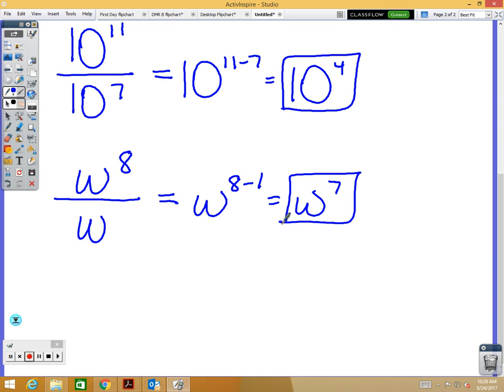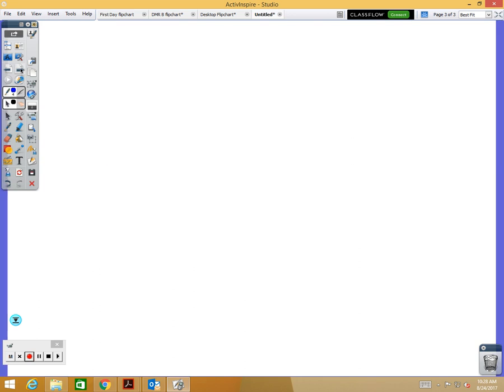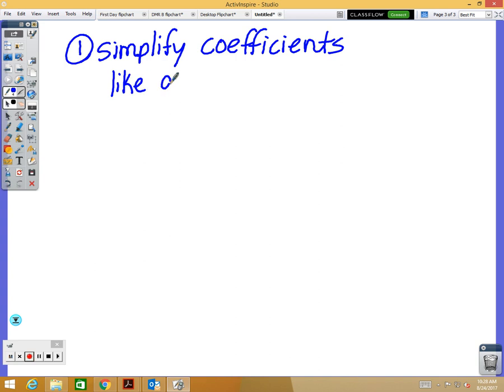Alright, let's talk about what's going to happen then if you have coefficients. So just like in the other problems, the harder ones had coefficients, numbers in front of your variables. We'll see what happens with those. So if you have coefficients, the first thing you're going to do is you're going to simplify the coefficients like it was just a fraction. And then your second and third steps are the same. Keep the base, subtract the exponents.